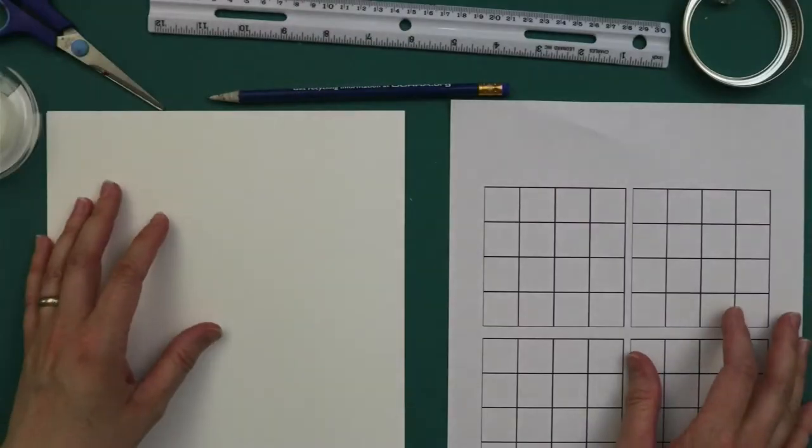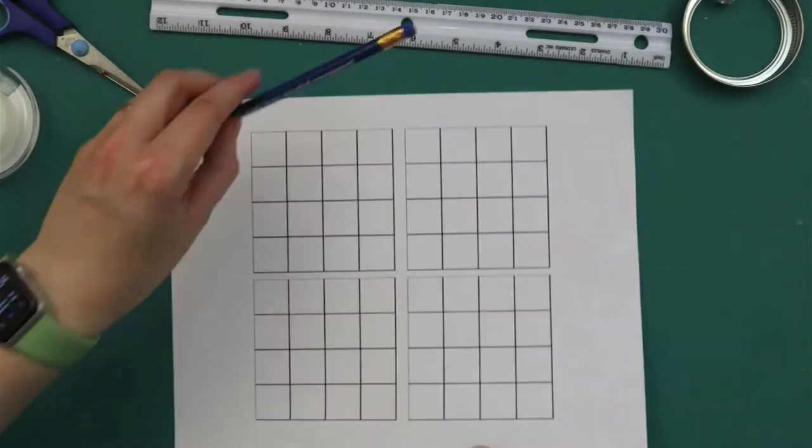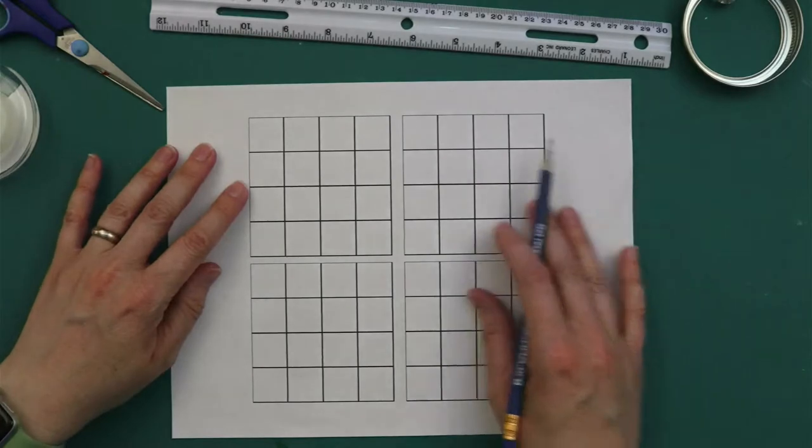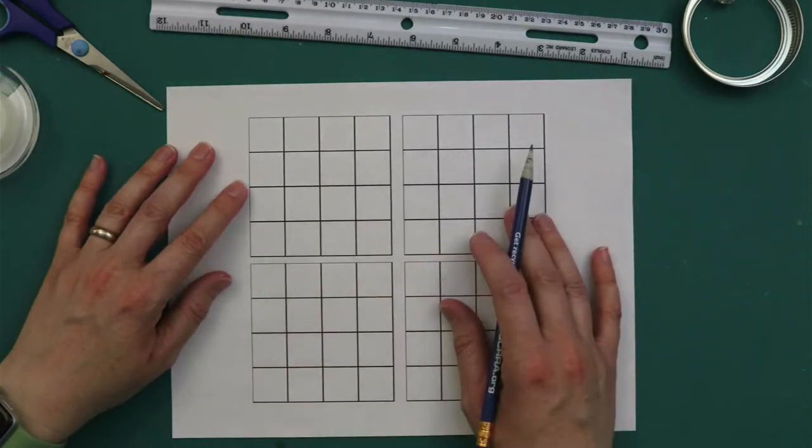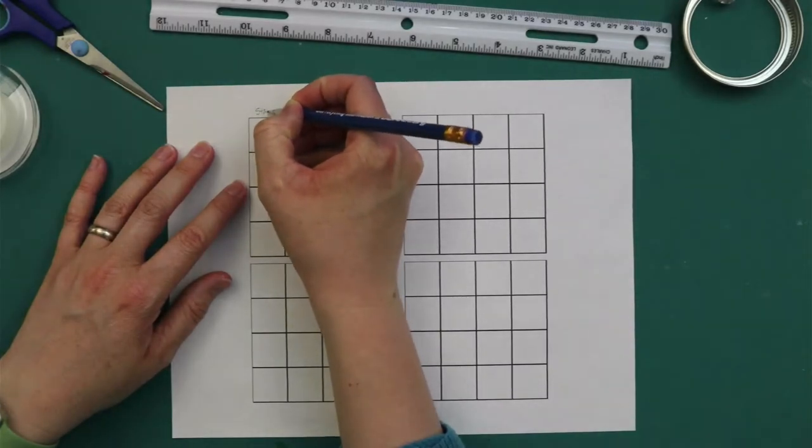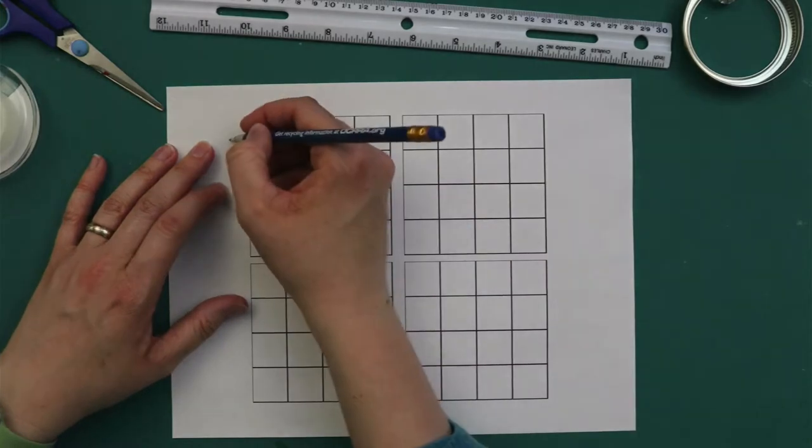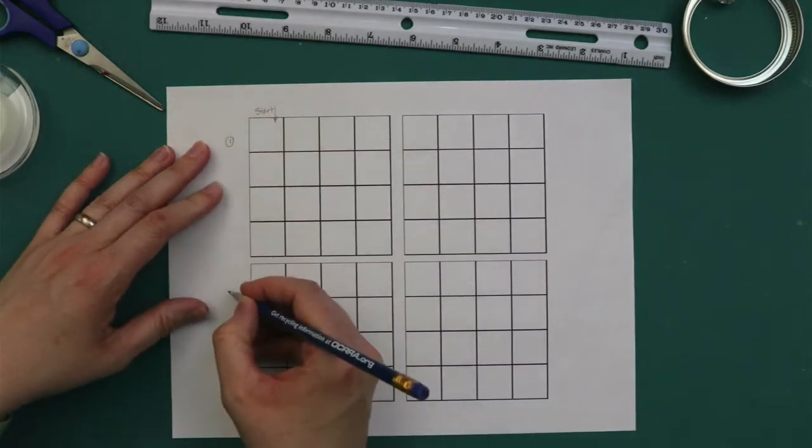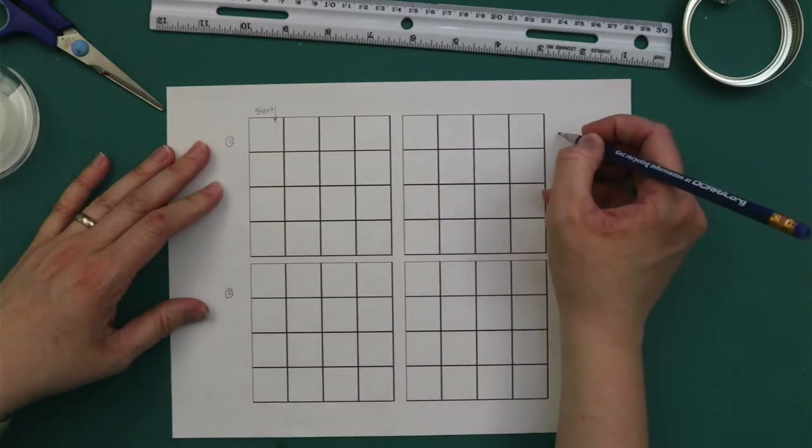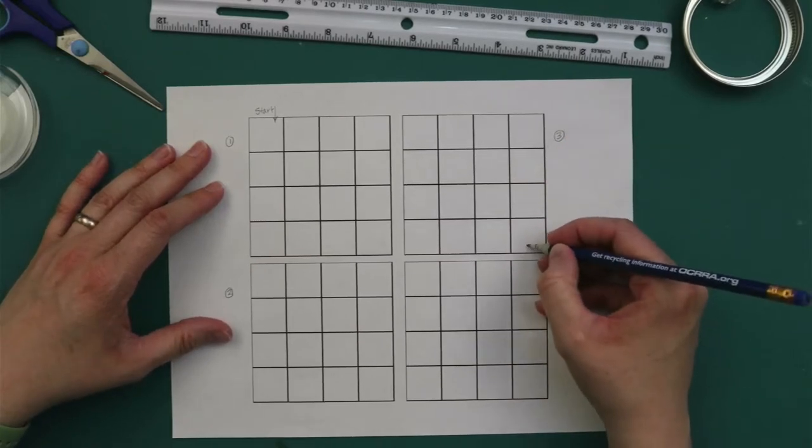So the first step in making our paper labyrinth is drawing the template for the mazes. I'm going to make a three layer maze so I'm going to have a start here where the marble will go in and this will be level one, level two, and level three and I will have the marble exit here.